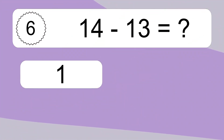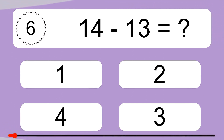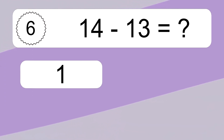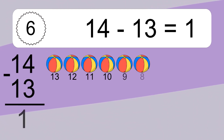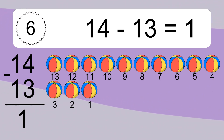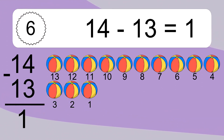14 minus 13 equals what? 14 minus 13 equals 1. Let's count it: 13, 12, 11, 10, 9, 8, 7, 6, 5, 4, 3, 2, 1.